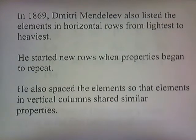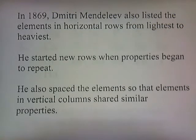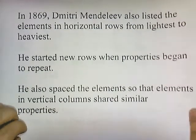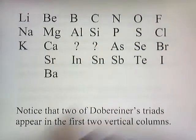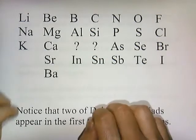In 1869, Dmitri Mendeleev listed the elements in horizontal rows from lightest to heaviest. He started new rows when properties began to repeat, and he spaced the elements so that elements in vertical columns shared similar properties.